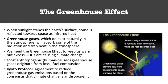First thing to know is that the greenhouse effect is naturally occurring — it is supposed to be there. It's what actually keeps our planet warm. Heat from the sun in the form of infrared heat enters Earth's atmosphere, and then it reflects back out to space a lot of the time, but greenhouse gases in the atmosphere actually trap some of that heat from the sun within the atmosphere, keeping the surface of the planet warm. This makes Earth hospitable for living things, but when we have too many greenhouse gases, that heat trapping intensifies and the planet actually starts to create a warming trend over time.